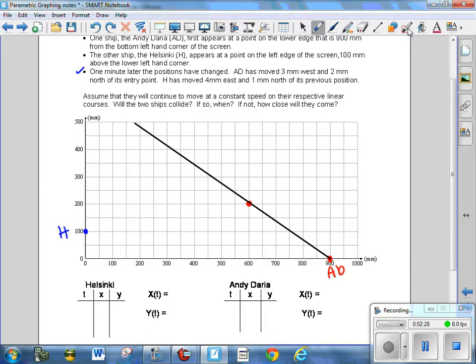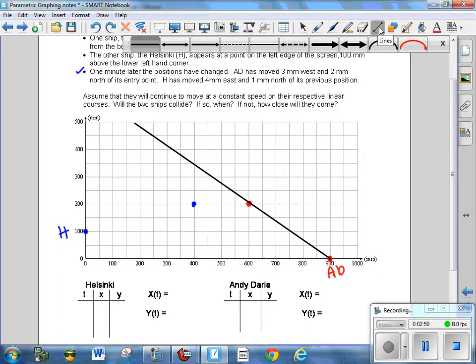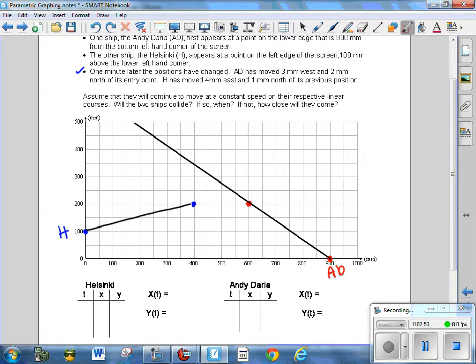Now, the Helsinki says that it moves 4 millimeters east and 1 millimeter north in one minute. In 100 minutes, it would be 400 millimeters to the east and 100 millimeters to the north. So now we would be right here. And I'm also going to draw a line to represent its path. Now, when we see these as they cross the computer screen here, we see that their paths indeed cross.